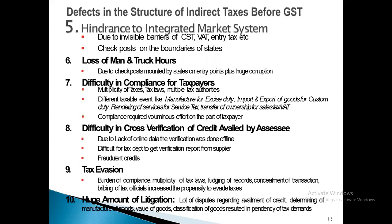Difficulty in compliance for taxpayers: multiplicity of taxes, multiple tax laws, and multiple tax authorities created problems. Different taxable events — manufacture for excise duty, import/export for customs duty, rendering of services for service tax, transfer of ownership for sales tax and VAT — required voluminous compliance effort. Difficulty in cross-verification of credit was exploited by assessees to avoid taxes, and verification was done offline due to lack of online data.